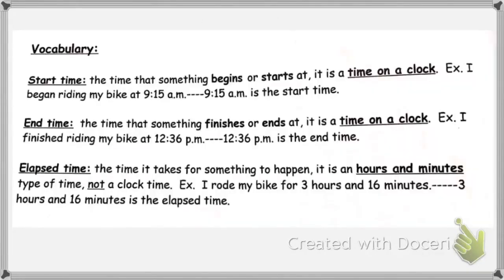Let's quickly review the vocabulary again. Start time is the time that something begins or starts at. It's a time on a clock. For example, I began riding my bike at 9:15 a.m. — 9:15 a.m. is the start time. It's a time on the clock.